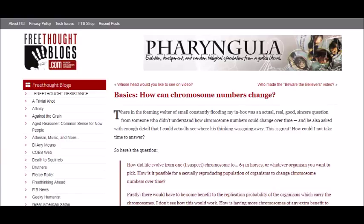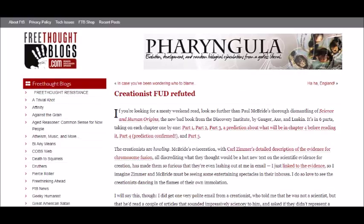Tompkins, as well as wacky creationist Jerry Bergman, have been trying for years to destroy the chromosome fusion argument. Their attempts have not been especially successful, as documented by PZ Myers in Basics, How Can Chromosome Numbers Change, Creationist FUD Refuted.